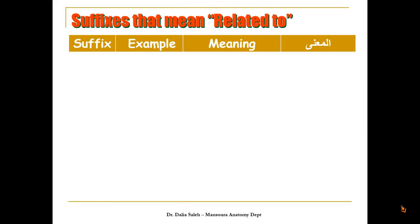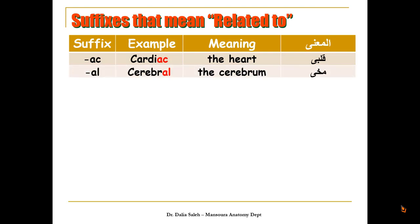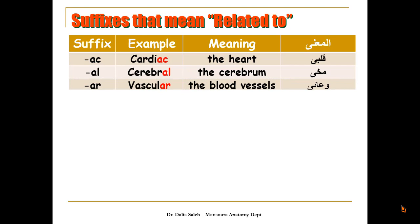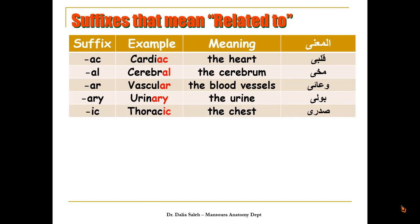Some suffixes mean 'pertaining to,' 'related to,' or 'resembling.' As in 'cardiac,' which means related to the heart — the suffix is '-ac.' As in 'cerebral,' related to the cerebrum — you add '-al.' As in 'vascular,' pertaining to the blood vessels — you add '-ar.' As in 'urinary,' related to the urine — you add '-ary.' As in 'thoracic,' related to the chest — you add '-ic.'